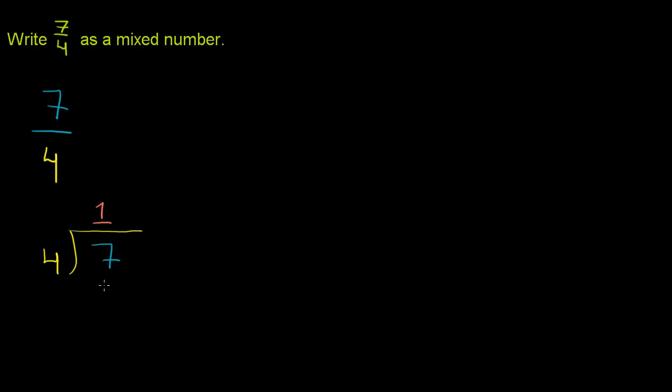1 times 4 is 4. And then what is our remainder? 7 minus 4 is 3. Let me just do the problem, and then we'll think about what it means in a second.